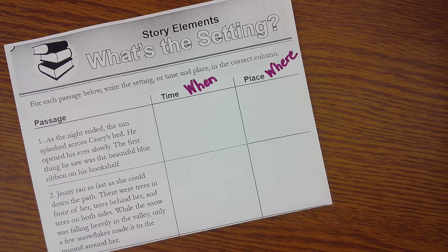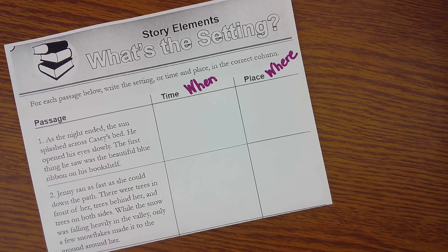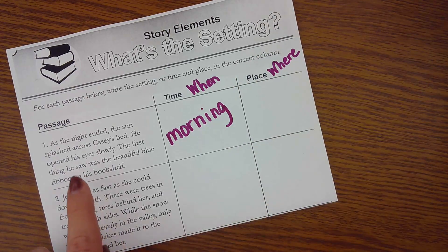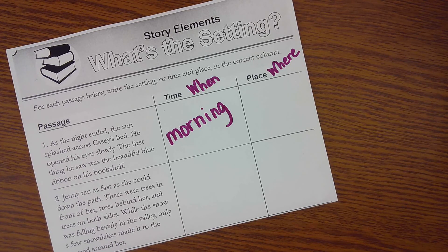If I'm focusing on the setting — the when and where this takes place — did you hear any clues in that story? Sometimes authors don't tell us exactly where and when something is happening. We have to look for clues. I see that the night ended and the sun splashed. I'm thinking that it could be the morning. Night is over, the sun is splashing across his bed — that gives me clues that the when is the morning.